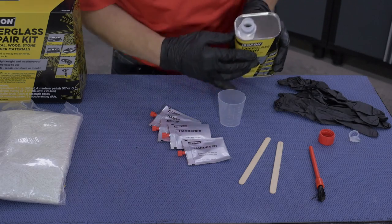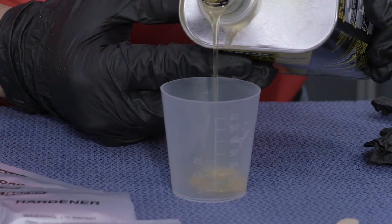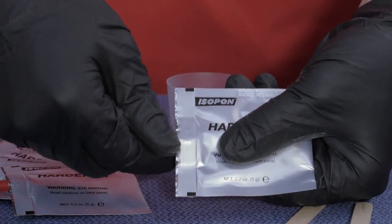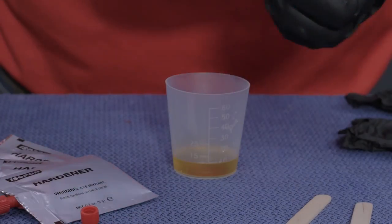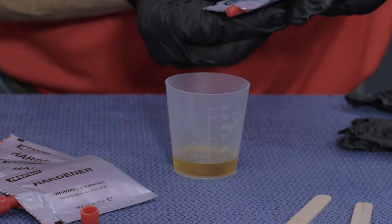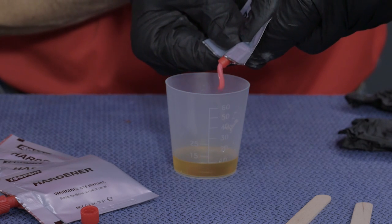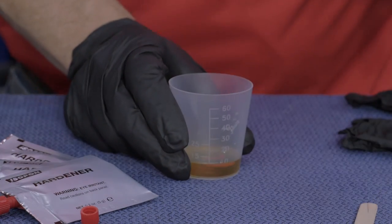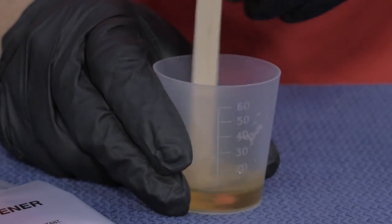To mix the resin, first break the seal and pour an ounce into the provided mixing cup. The mix ratio is one pea-sized drop of catalyst per 10 milliliters of resin, which is easily dispersed into the cup from the foil pack. Then mix thoroughly until you don't see any streaks in the mixture.